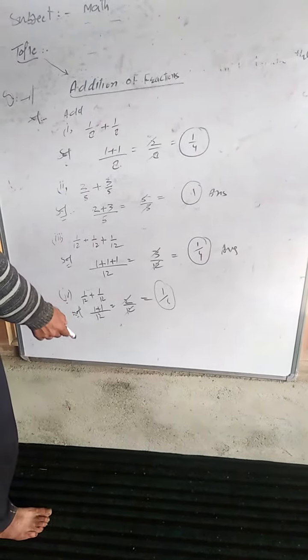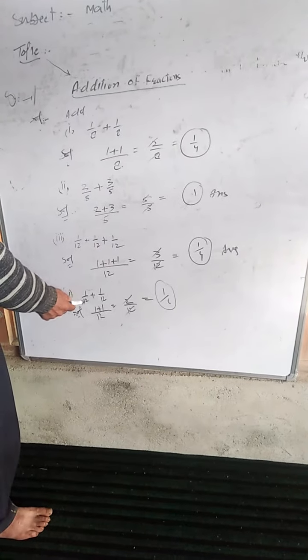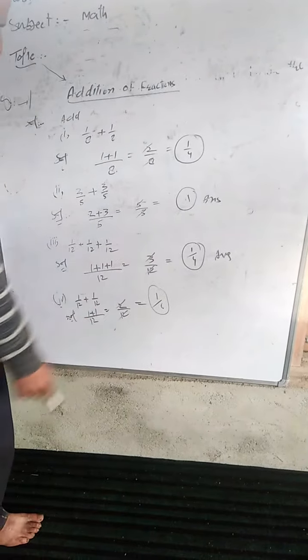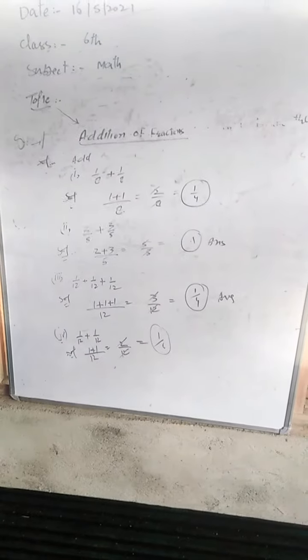One by twelve plus one by twelve. One plus one over twelve. Two by twelve equals one by six. So one by six is the last answer.